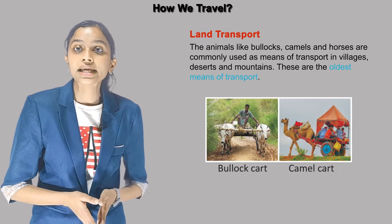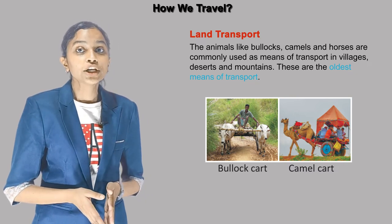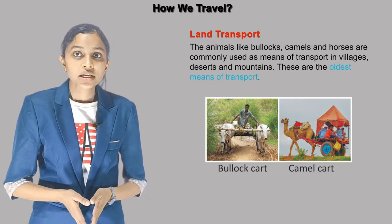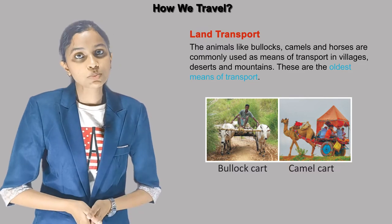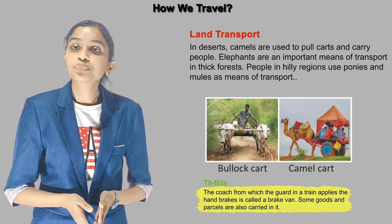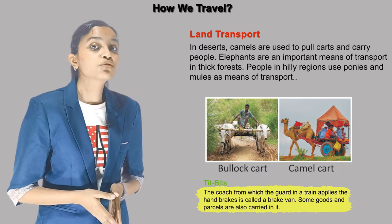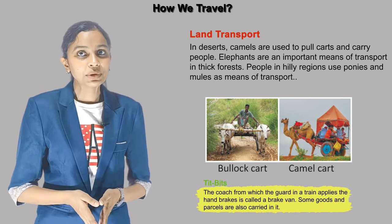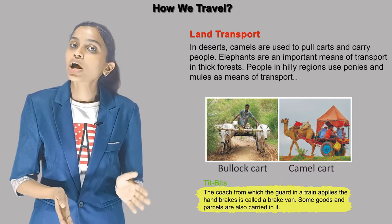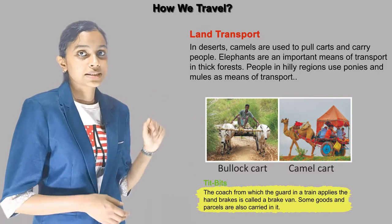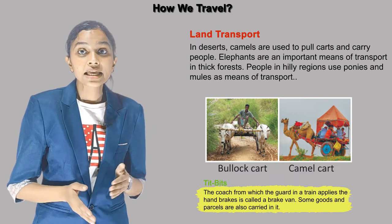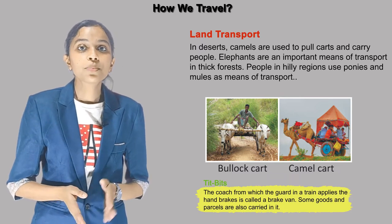Animals like bullocks, camels and horses are commonly used as means of transport in villages, deserts and mountains. These are the oldest means of transport. In deserts, camels are used to pull carts and carry people. Elephants are an important means of transport in thick forests. People in hilly regions use ponies and mules as means of transport. Tits and bits: the coach from which the guard in a train applies the hand brakes is called a brake van. Some goods and passengers are also carried in it.